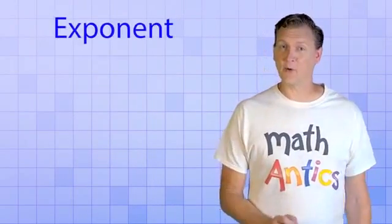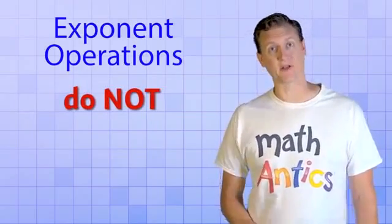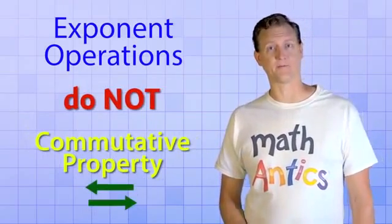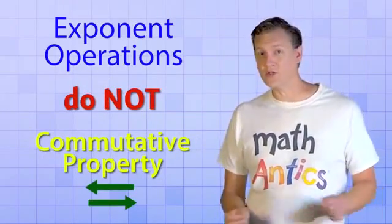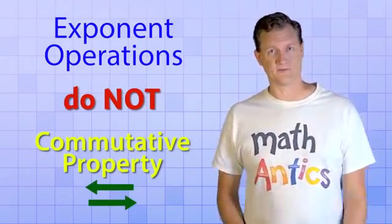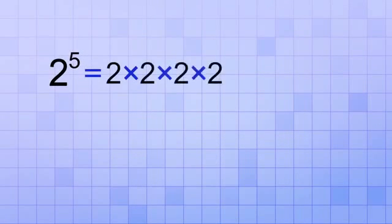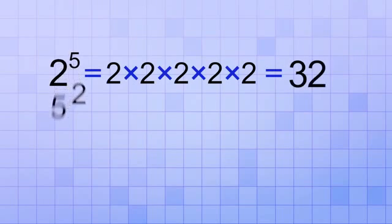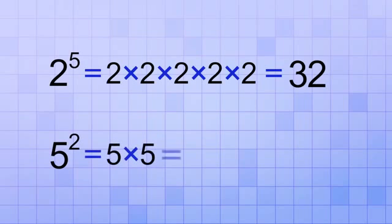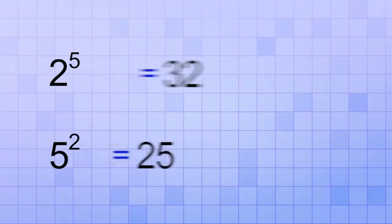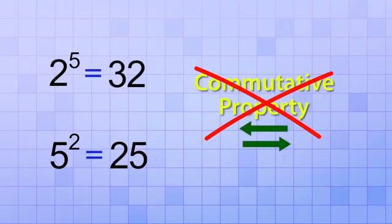One more thing you should know is that exponent operations do NOT have the commutative property. In other words, you can't switch the order of the numbers without getting a different answer. For example, 2 to the 5th power is 2 times 2 times 2 times 2 times 2, which equals 32. But if we switch the numbers, 5 to the 2nd power is 5 times 5, which equals 25. So exponents do NOT have the commutative property.